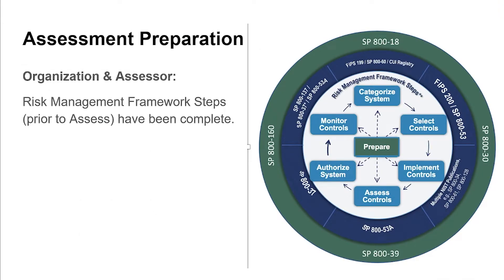In other words, if they're in the categorized phase of their system development, or if they happen to be in the implementation of system controls — maybe they just implemented those controls and this is a new system — they need to know what part of the risk management framework process they're in. If they're already in the ongoing phase where they're monitoring all the controls and going through the annual control assessment, they need to know where they are in the NIST risk management framework process to have a better understanding of what is to be expected when the assessment happens.